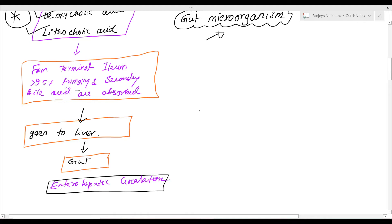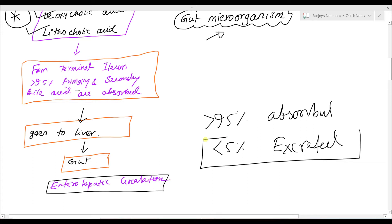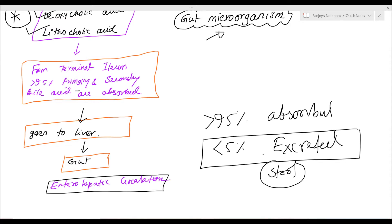From the GI tract, more than 95% of bile acids and bile salts are absorbed, and only less than 5% are excreted through the stool. This is the way of excretion of cholesterol from the body through the stool. If more and more bile acid or bile salt is excreted, more cholesterol is removed from the body.